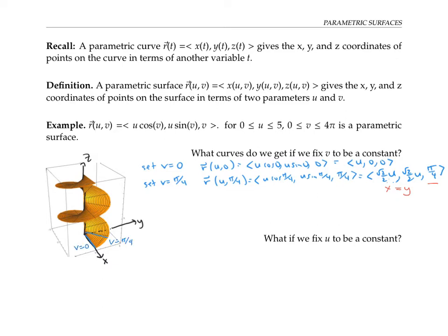Let's do one more. If we set v equal to π/2, we get the expression that simplifies to 0, u, π/2. So it's a line that goes in the y-direction at constant height π/2. So when we fix v to be a constant, we're getting these constant-height lines that go straight out from the z-axis, kind of like steps on our staircase.